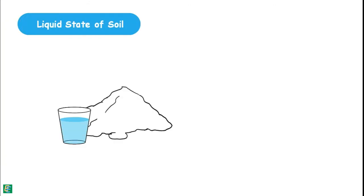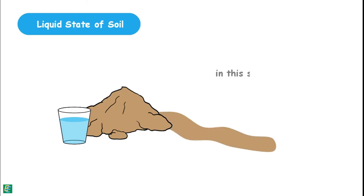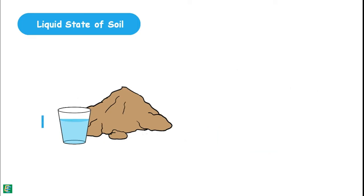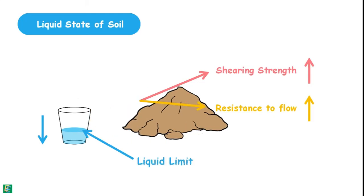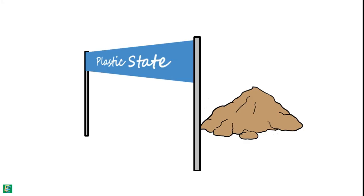In the liquid state, the water content of the soil is such that it behaves like a liquid and offers no resistance to flow. When the water content drops, it gains shear strength and develops resistance to flow. After reaching a certain water content named as liquid limit, soil enters into a state called the plastic state.